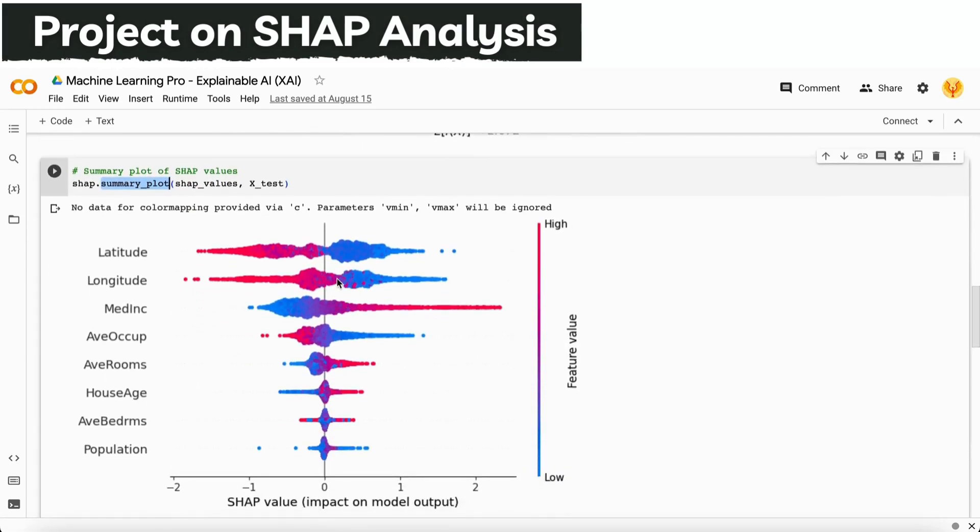This summary plot shows all the values, whether values are low or high, and how they are influencing our target variable. It shows that if median income values are very high, that is positively correlated with our target variable. You can see that the population column has no or very negligible effect on the price of the house.